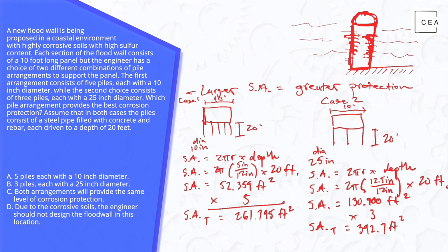So we're then going to compare the case one surface area total value to the case two surface area total value. And we see that the case two surface area total value is greater than the case one surface area total value.